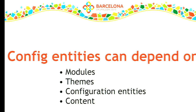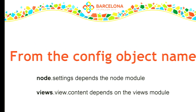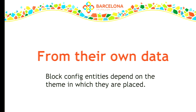Additional dependencies can be added based on the logic implemented by the configuration entity. The first dependency that every bit of configuration has, whether simple or a config entity, is based on the config object name — so node.settings depends on node, a view depends on views. But they can also depend on information contained within them. For example, a block config entity says where a block is placed and has a theme key specifying which theme it's enabled in. If you uninstall the theme, that block configuration entity has no meaning and should be deleted.